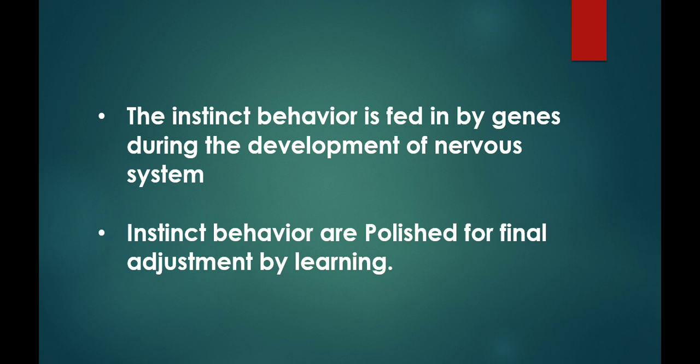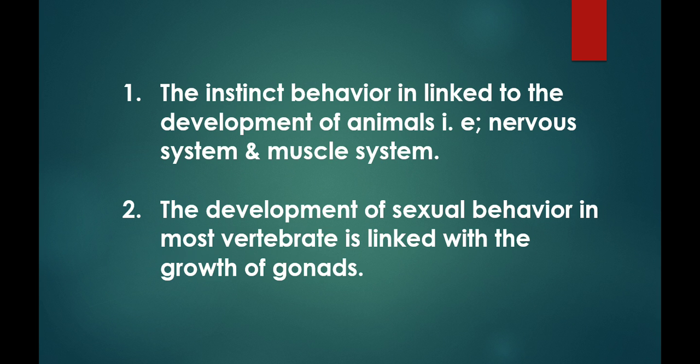Instinct behavior can be polished for final adjustment by learning. Instinct behavior is linked to the development of the animal's nervous system and muscle system. The development of sexual behavior in most vertebrates is linked to the growth of the gonads.